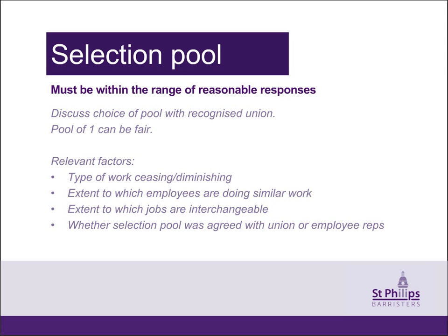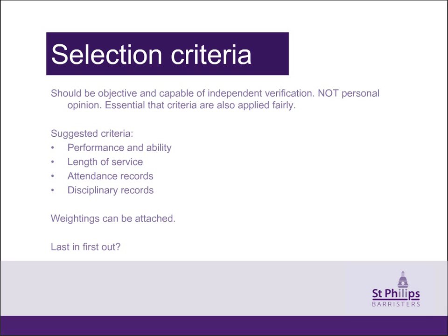In order to be reasonable, the redundancy selection criteria should, as far as possible, be both objective and capable of independent verification — meaning the criteria should be measurable rather than just based on someone's personal opinion. They should also be discussed with the union if one is recognised. Potentially fair criteria could include performance and ability, length of service, attendance records, or disciplinary records. It is legitimate to attach weightings to the criteria reflecting their relative importance, but the employer needs to be able to justify those weightings. Where possible, criteria should be measured by reference to HR records covering performance and attendance — so if you know that a redundancy situation is likely, do try to make sure your records are in place.